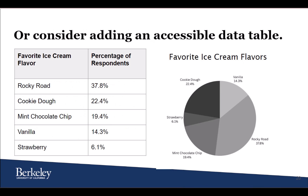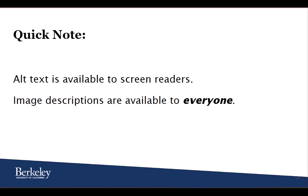You might also consider adding an accessible data table to your chart that further breaks down your data. In this example, we have the same pie chart but with an accompanying accessible data table that presents the same information. One thing to keep in mind: alt text is typically only available to those using screen readers, but long image descriptions and accessible data tables are available to everyone engaging with your content.